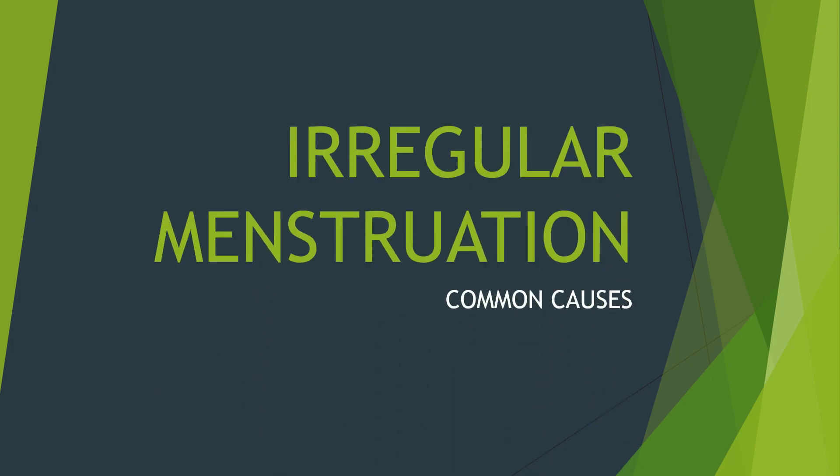Welcome to today's lecture. Today we'll be talking about menstruation — irregular menstruation and its common causes. It is important to note that every woman from the age of puberty to the point of menopause experiences menstruation, but within these active periods there are constant reports of irregular menstruation. Today we will attempt to mention the causes and some of the factors that could lead to irregular menstruation.